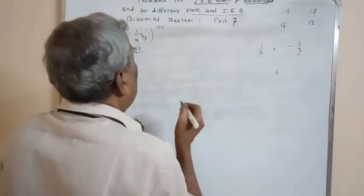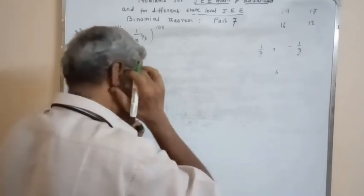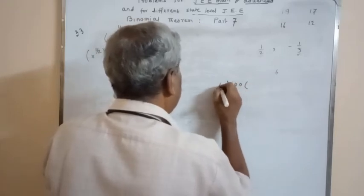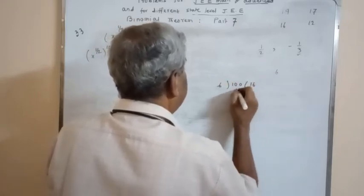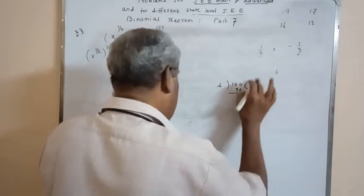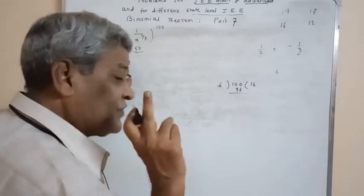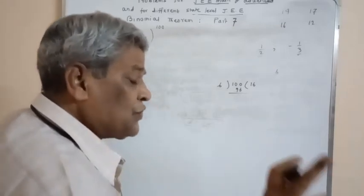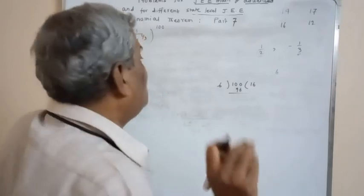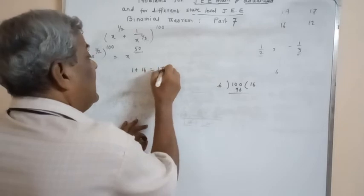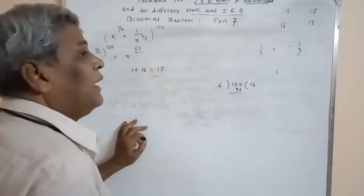There are 101 terms total. The first term is an integer power. After that, 100 remaining terms exist. Dividing 100 by 6 gives 16. So after the first term, there are 16 more terms containing integral powers of x. Altogether, there are 1 + 16 = 17 terms with integral powers of x.